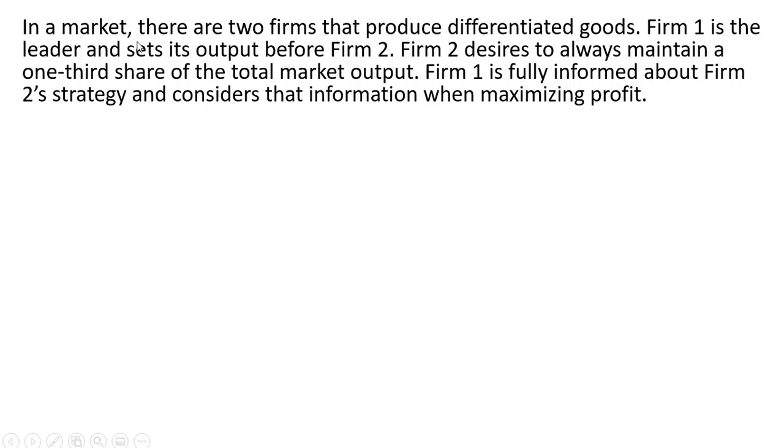So here's a setup. In a market, there are two firms that produce differentiated goods. Firm one is the leader and sets its output before firm two. Firm two desires to always maintain a one-third share of the total market output. Firm one is fully informed about firm two's strategy and considers that information when maximizing profit.